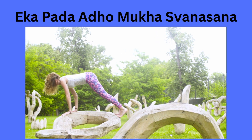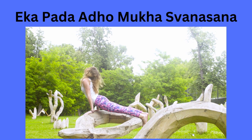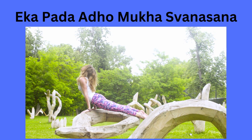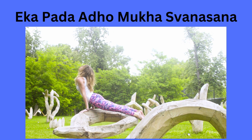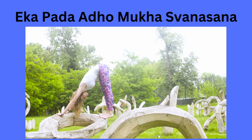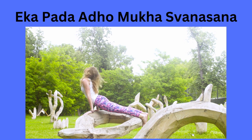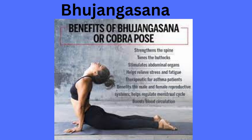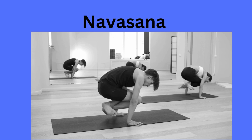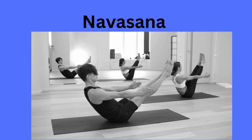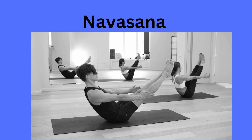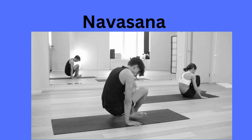Yagapada Adho Mukha Savasana helps to improve the breathing, tone your arms, hands, legs, and thighs, and reduce the abdominal muscles. Bhujangasana is nothing but a cobra pose — it is a great choice to strengthen the buttocks muscles and tone your abdominal muscles. Navasana, a boat pose, is the simplest power yoga to reduce weight and concentrates all major muscles of your body.